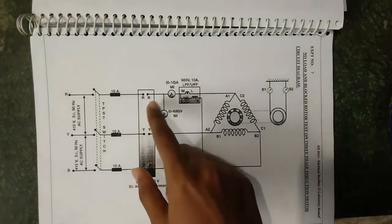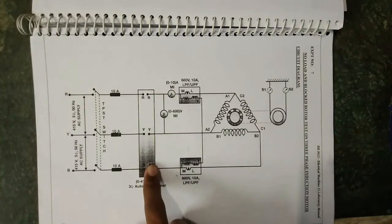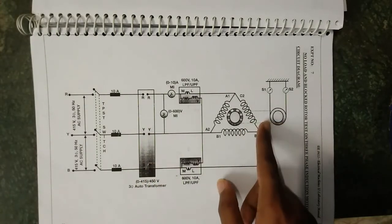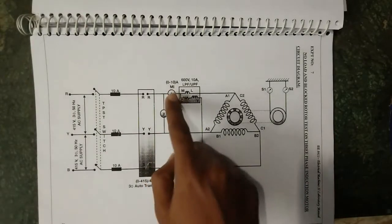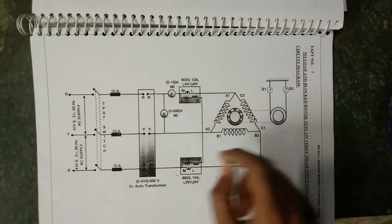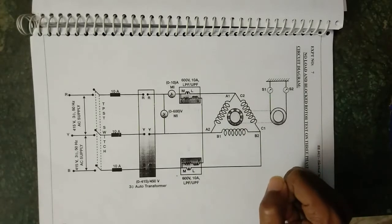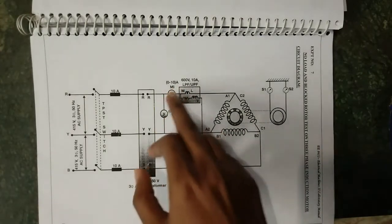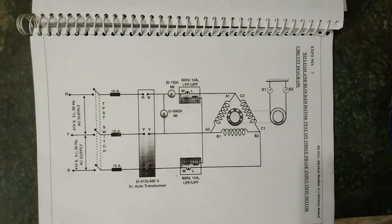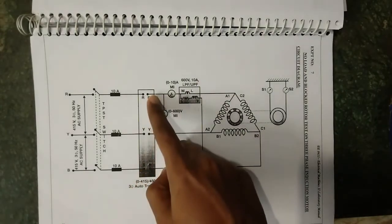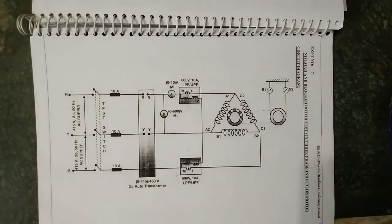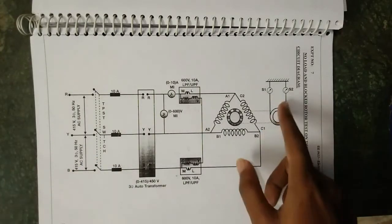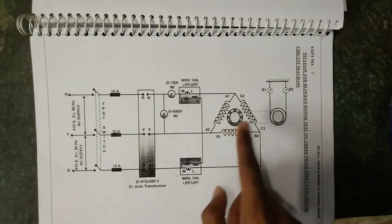The procedure is: with the auto transformer in the minimum position, the rotor in the blocked position, the supply is switched on. The voltage is increased and the ammeter reads the rated current of the motor. All the meter readings—voltmeter, wattmeter, and ammeter readings—are noted down. Then the auto transformer is brought back to the minimum position and the supply is switched off. Here we apply load, so it is called a blocked rotor test.